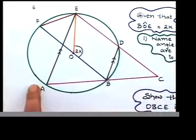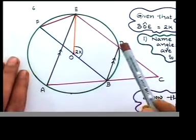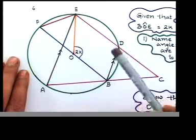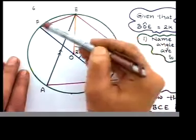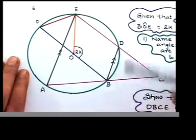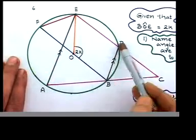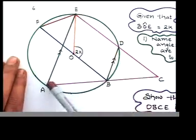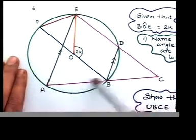A circle is there. Do you see any cyclic quadrilaterals? Come on, think. I can see two of them. BDEF, that's one cyclic quadrilateral. The second one is ABDE. Do you agree that also can be called as a cyclic quadrilateral?